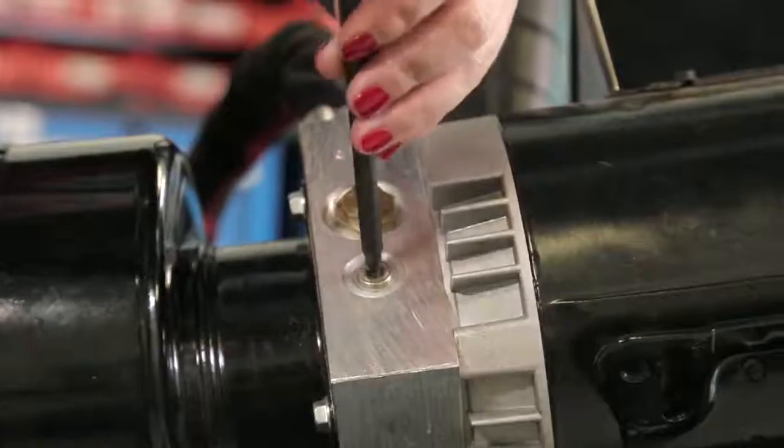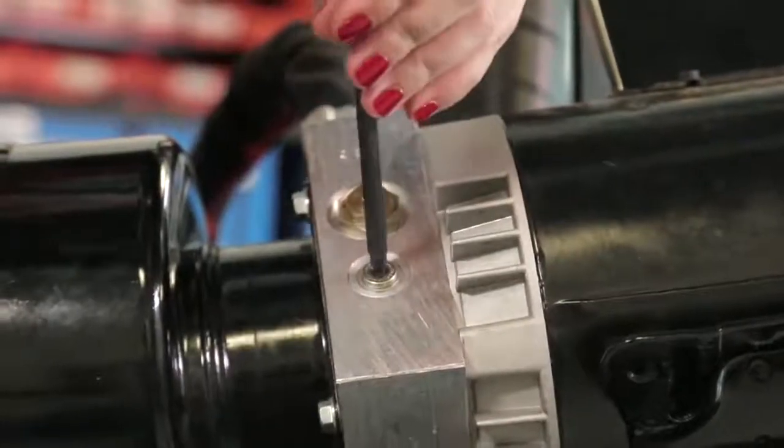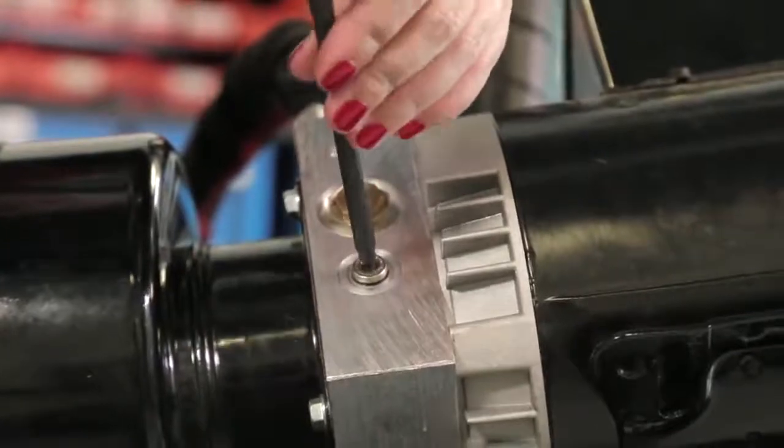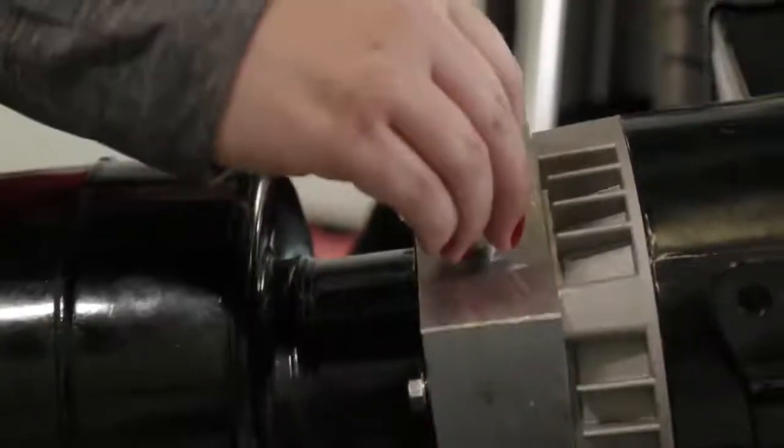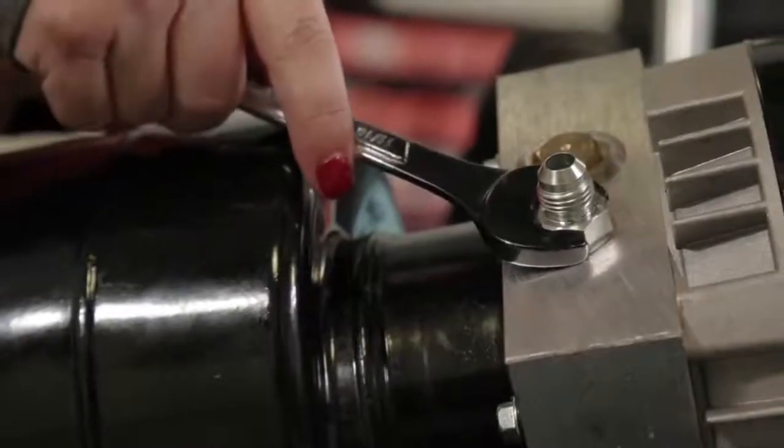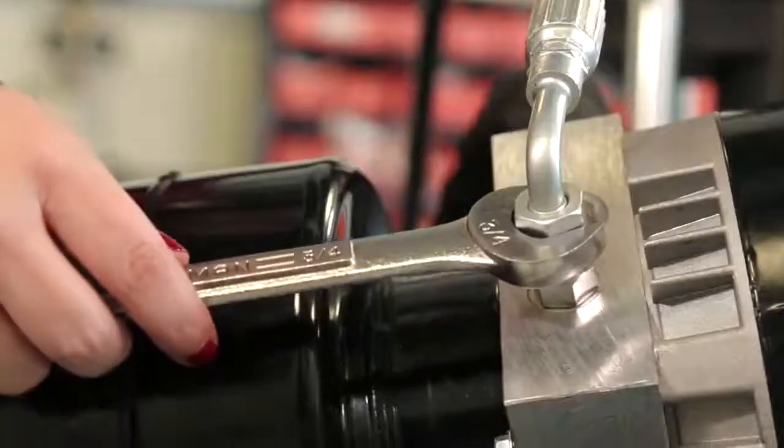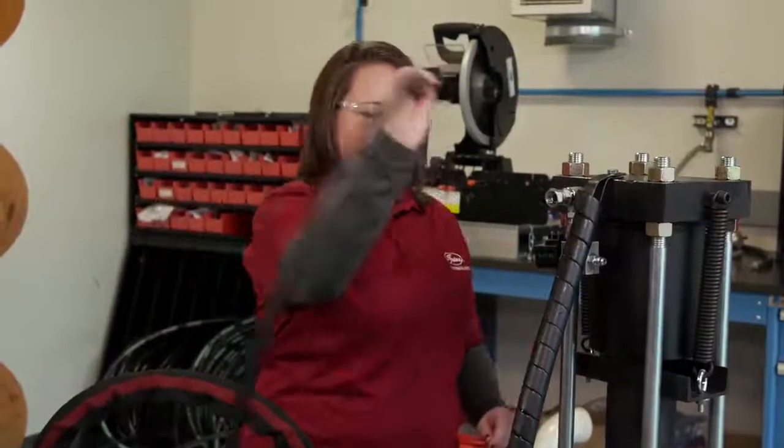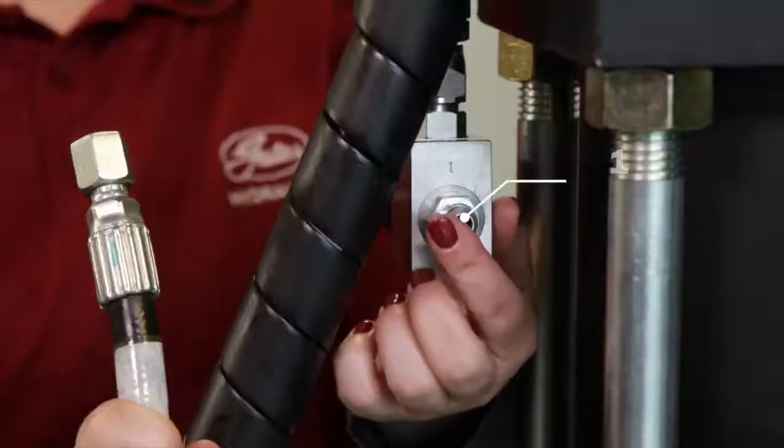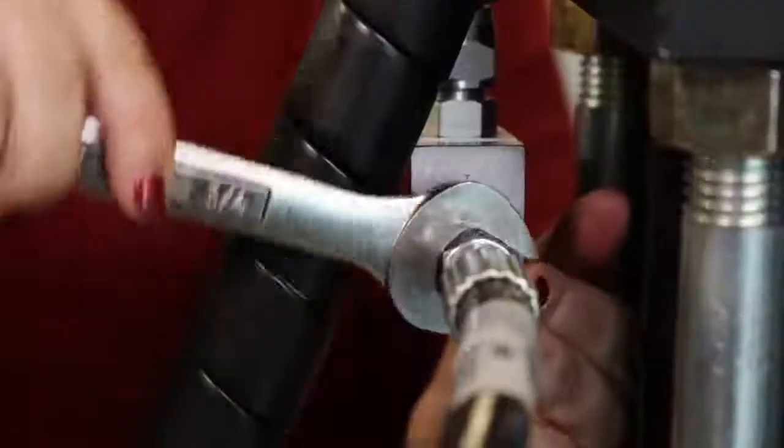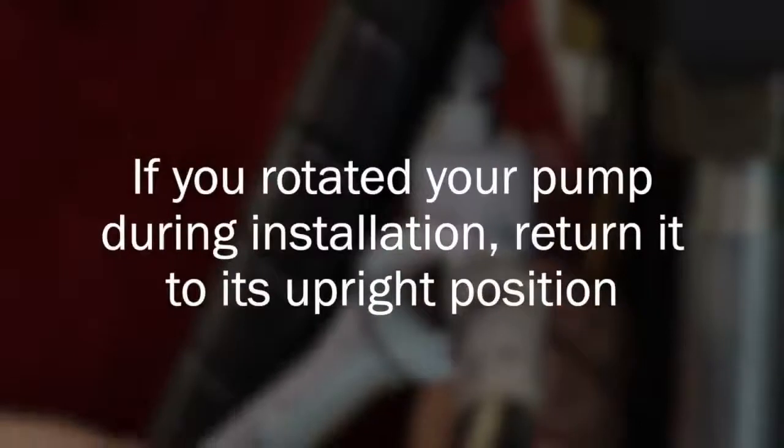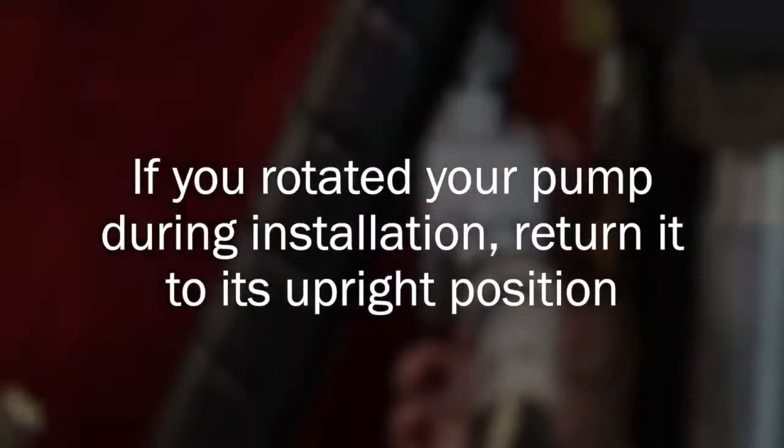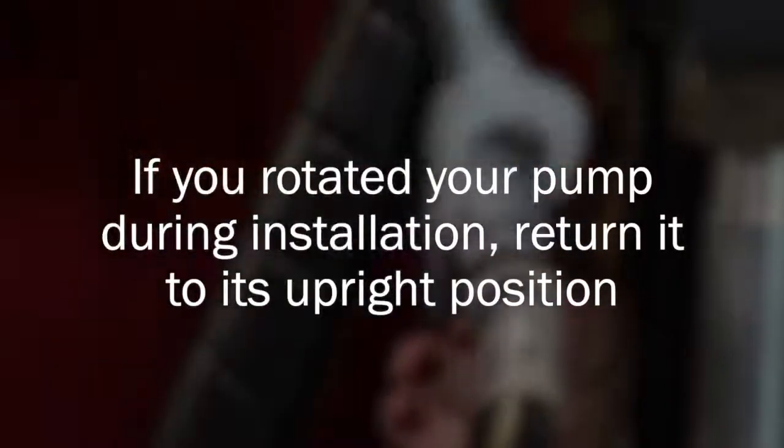Remove the current hardware on the drain port, likely using an Allen wrench. Insert the drain line adapter, tighten, and connect the hose assembly to the adapter and tighten. Then connect the other end of the return line to port 1 on the solenoid assembly and tighten. If you rotated your pump during the installation, return it to its upright position.